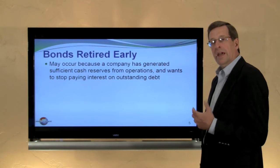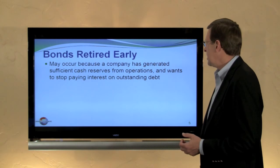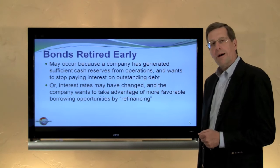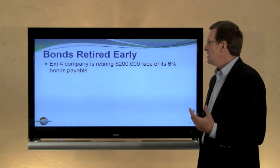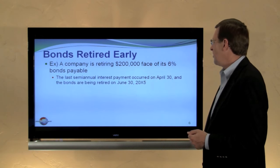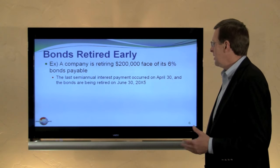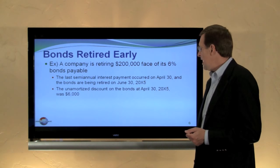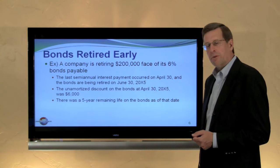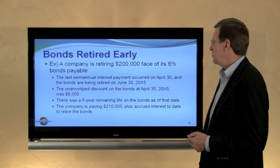Now considering bonds retired early: a company may retire its bonds early because it has generated sufficient cash flows and wants to stop incurring interest costs, or because interest rates have changed and it wants to refinance at a lower rate. In this example, a company is retiring $200,000 face amount of its 6% bonds payable. The last interest payment occurred on April 30th, and we're retiring these bonds on June 30th, so May and June have elapsed. The unamortized discount as of April 30th was $6,000, with five years of remaining life, and the repurchase price is $200,000 plus any accrued interest.